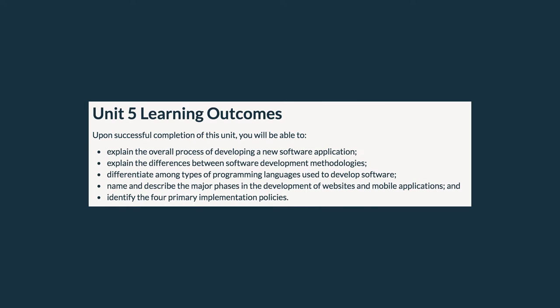In Unit 5, you will learn about the process to develop new software applications, understand the difference between software development methodologies, differentiate between the different types of programming languages, study the major phases in mobile application and website development, and identify four primary implementation policies.